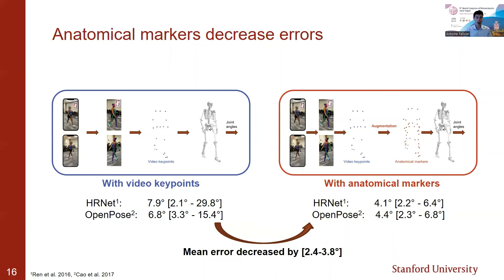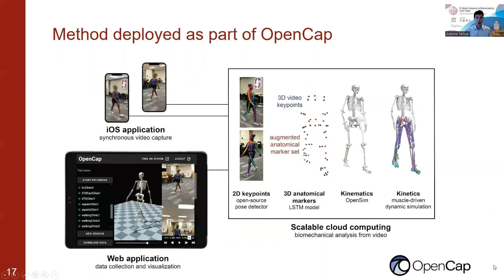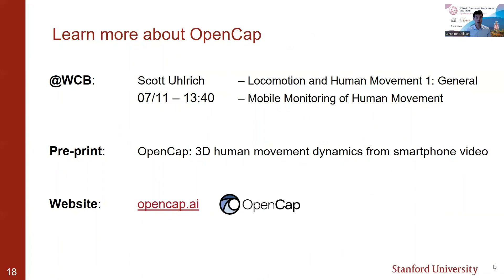Overall, we now have a way to rapidly capture 3D joint kinematics from smartphone video. Motivated by these results, we incorporated this pipeline into OpenCAP, a new software package we developed to estimate 3D joint kinematics and kinetics from smartphone video. OpenCAP is packaged with an iOS application and a web application to facilitate data collection, automatically computes joint kinematics in the cloud, does not require any expertise or specialized hardware, and is freely available for researchers. To learn more, please check out Scott Ulrich's presentation at WCV, our preprint, and our website.